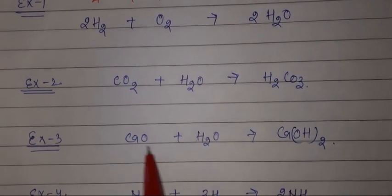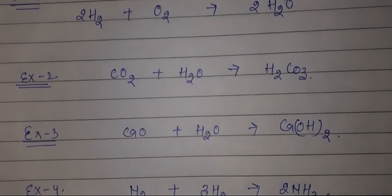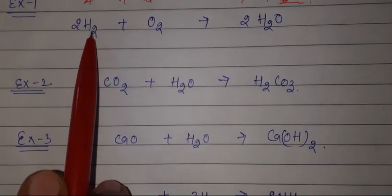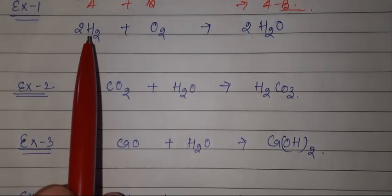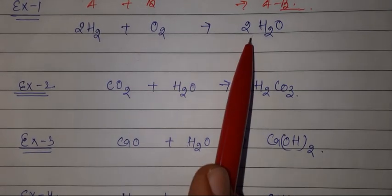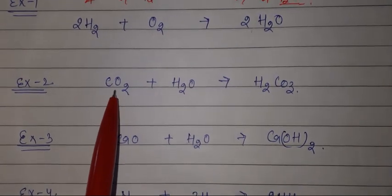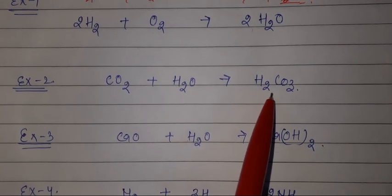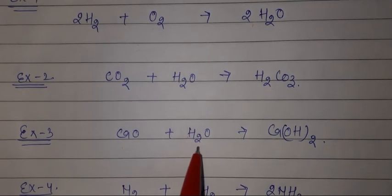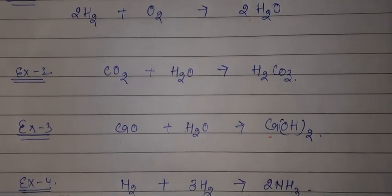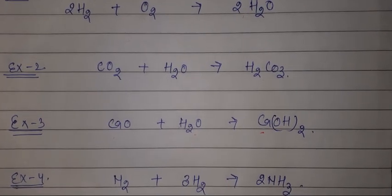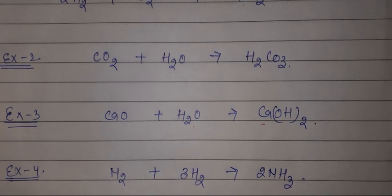In all these examples, we can see that the reactants combine to give a single product. H2 and O2 combine to give H2O. CO2 and H2O combine to give H2CO3. CaO and H2O combine to give Ca(OH)2. And N2 plus 3H2 combine to give 2NH3.